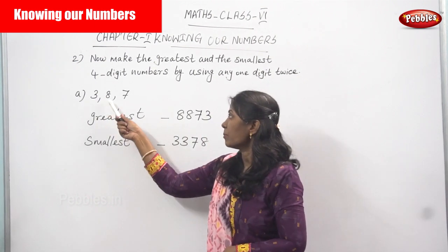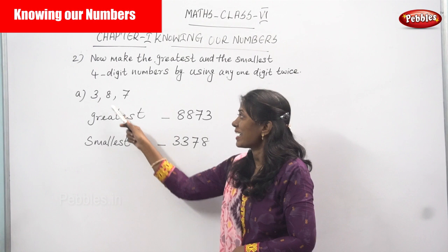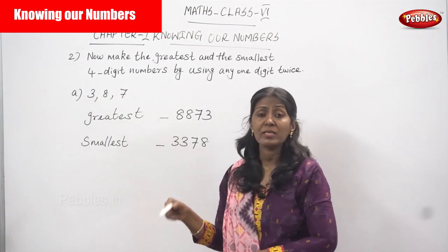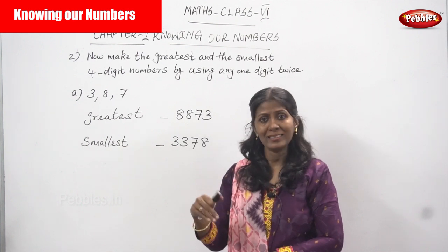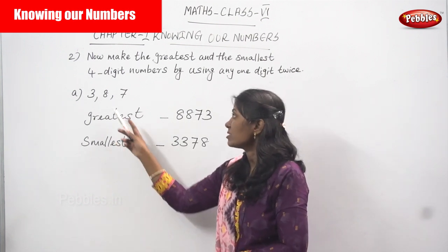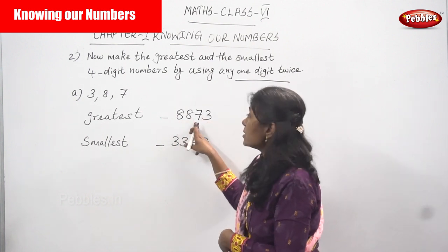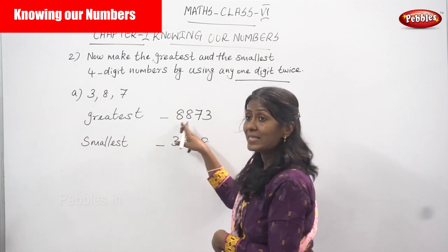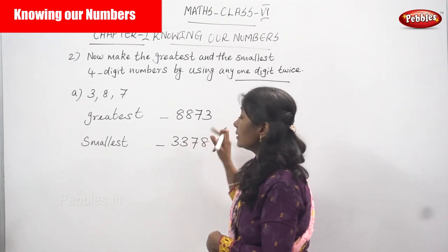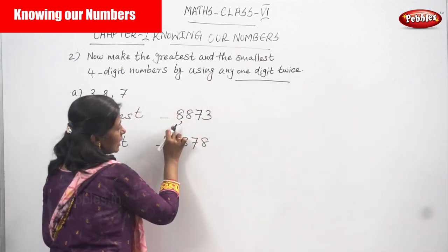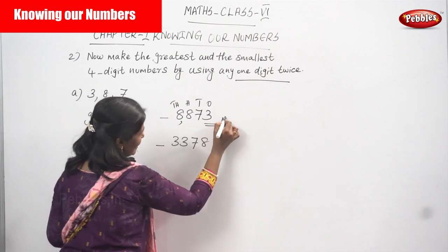The first set is 3, 8, 7. To find the greatest number, arrange in descending order. The greatest digit is 8, and since we can use any one digit twice, I repeat 8 again. Then 7, and finally the smallest digit 3. So the greatest number is 8873 — eight thousand eight hundred and seventy-three.